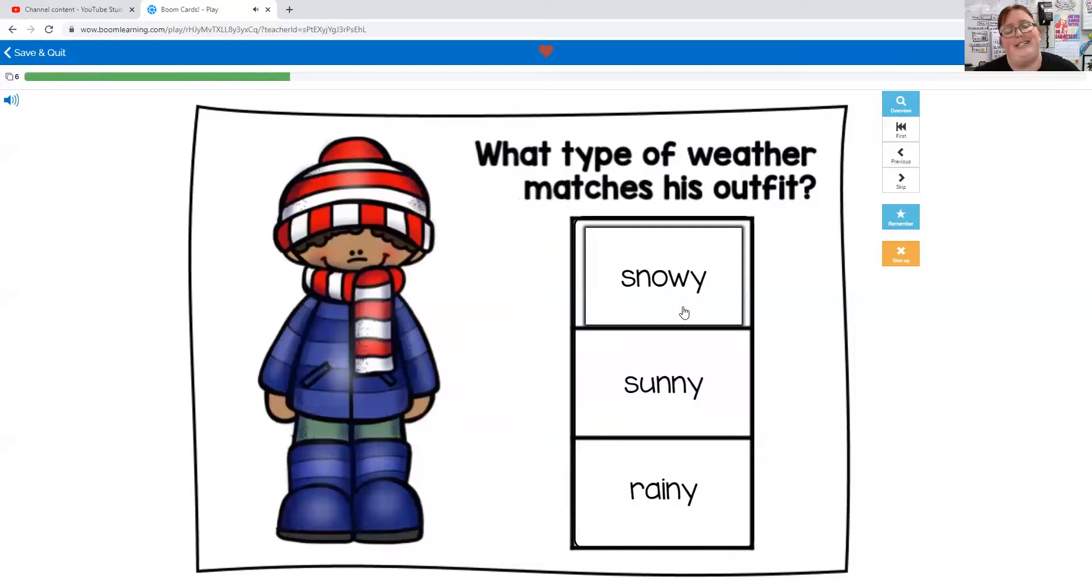What type of weather matches his outfit? Snowy, sunny, or rainy? He's wearing a hat, a scarf, a coat, and boots. That looks like snowy weather outfits.